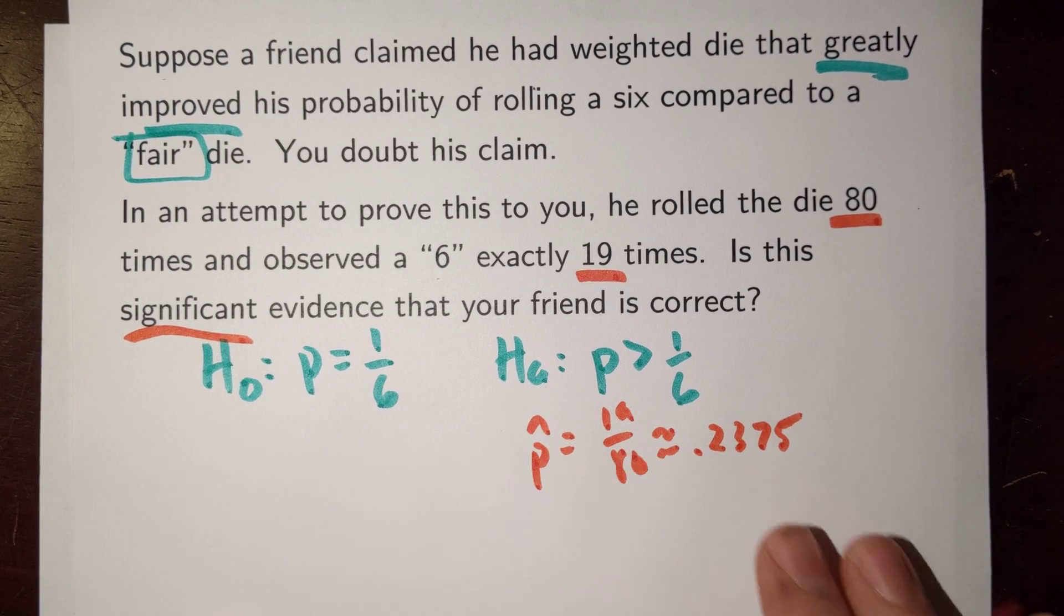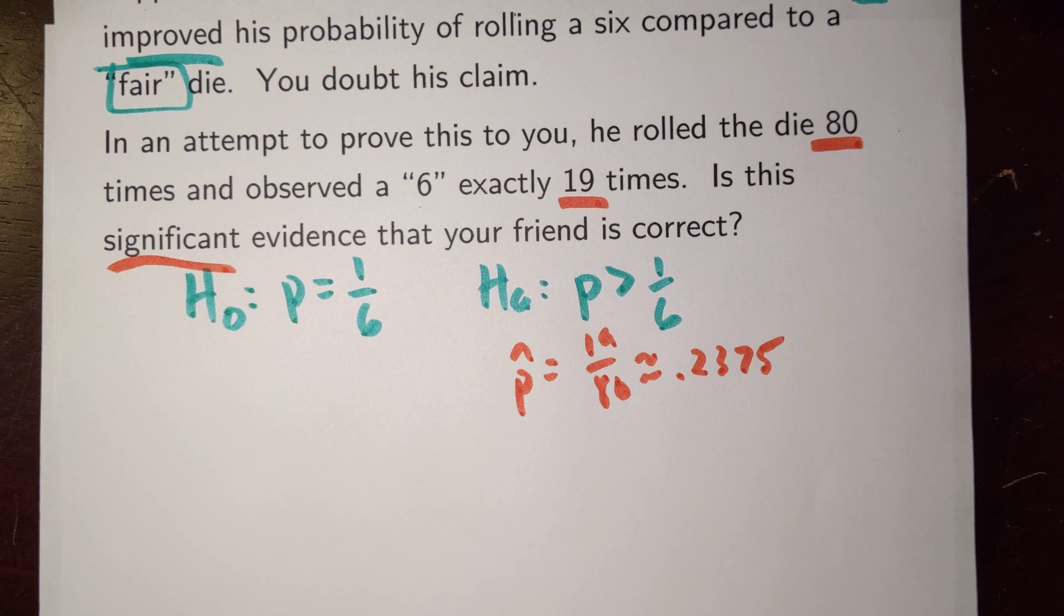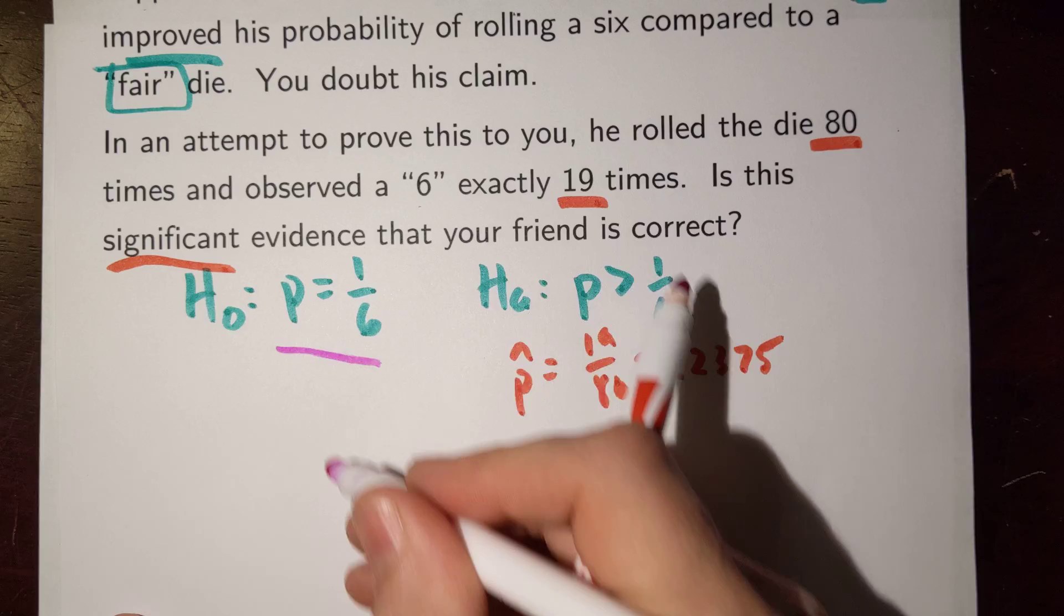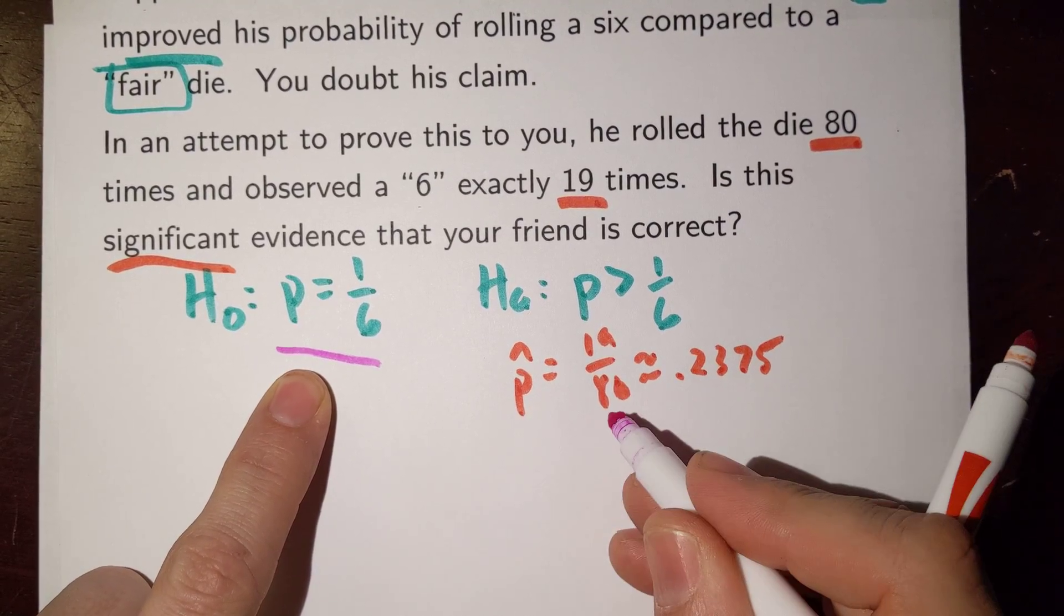So to do that, instead of making a confidence interval, let's actually calculate a probability. And let's have a probability that's based on an assumption that our null hypothesis is correct. So we're assuming this is true. So if this is true, what's the probability of getting a sample statistic like this?